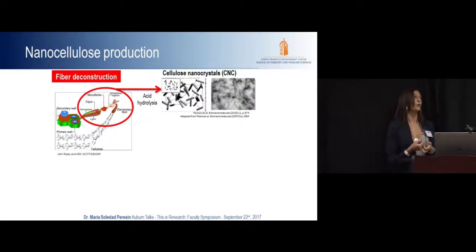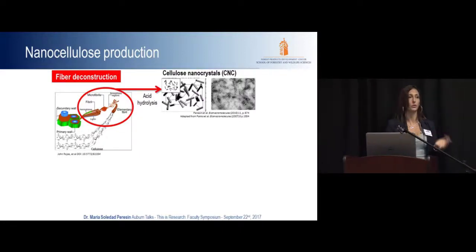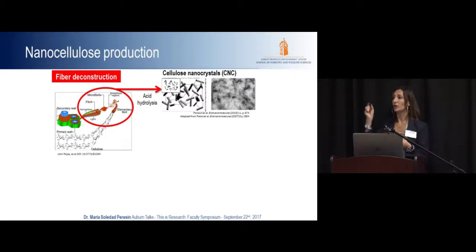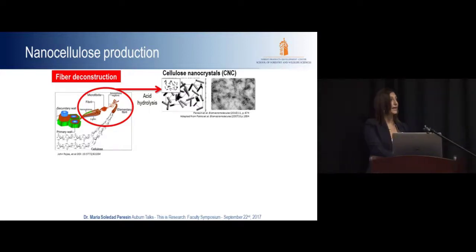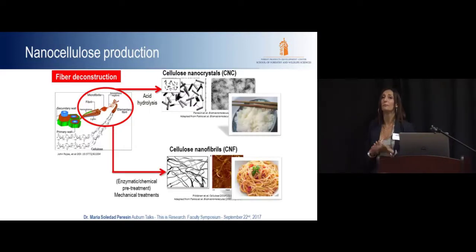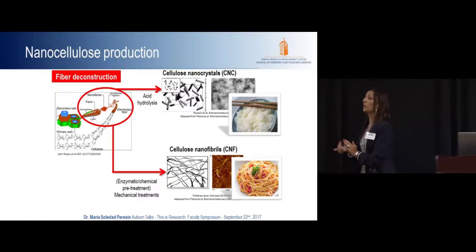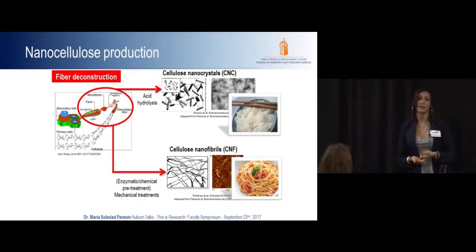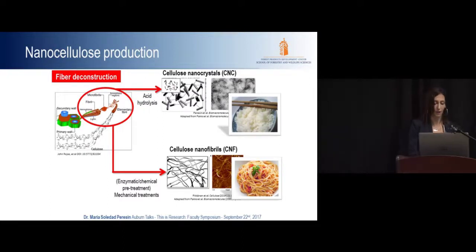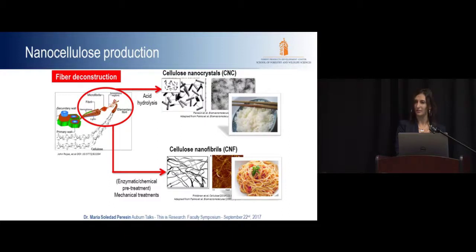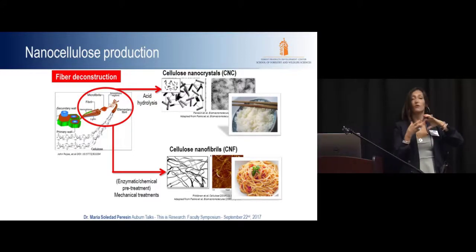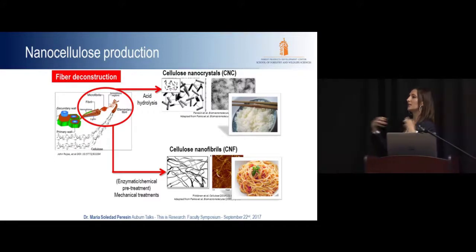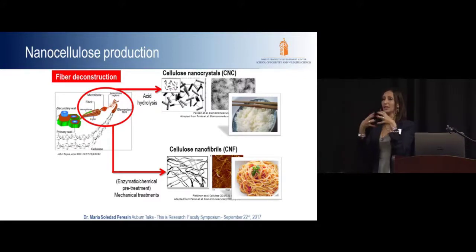There are two ways to produce nanocellulose. First, we can do acid hydrolysis, which removes the amorphous regions and leaves only the more crystalline form of cellulose — these are called cellulose nanocrystals, which are rod-like particles. Or we can do mechanical fibrillation of the fibers, going further than what we do to make paper, and we end up with nanofibrillated cellulose. A good way to think about the difference in aspect ratio: nanocrystalline cellulose behaves like a bowl of rice, while nanofibrillated cellulose is like a bowl of spaghetti — long fibers interconnected to each other.